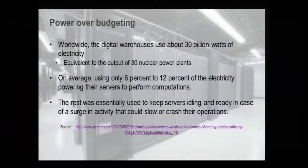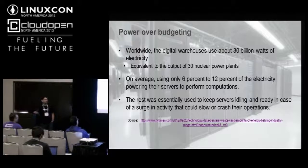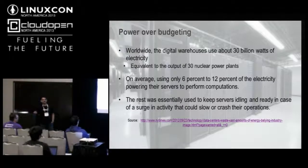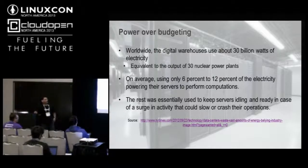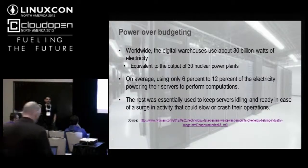Let us look at how this over-budgeting affects power planning. This news clip is from NYTimes.com. It says that 30 billion watts of electricity is used to power digital warehouses, which equals 30 nuclear power plants. Out of that, only 6 to 12 percent is actually used for performing computation. The rest is just a safety margin to handle worst-case scenarios so systems will not crash. The utilization rate is very low, yet there is a lot of over-budgeted power.